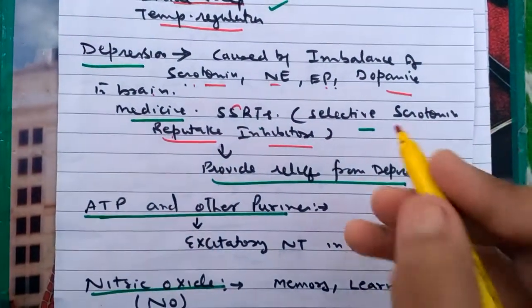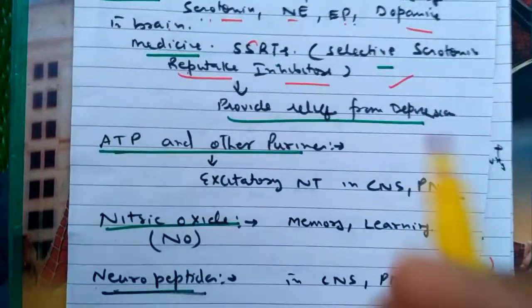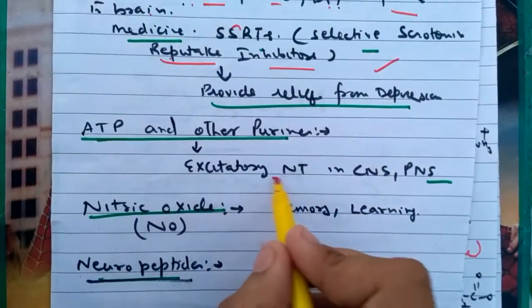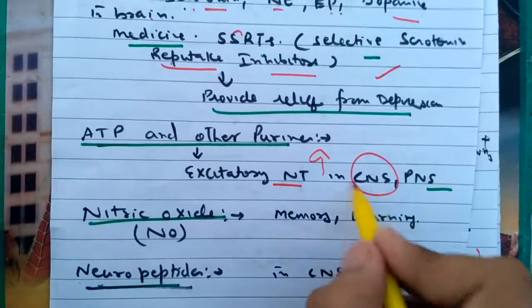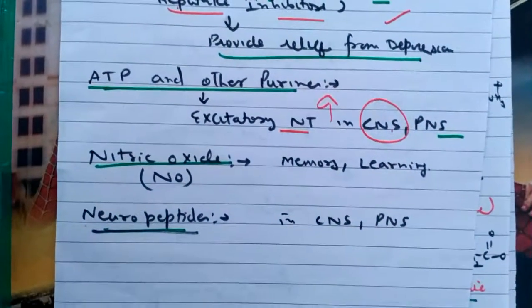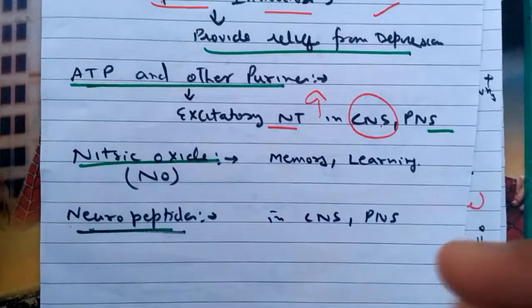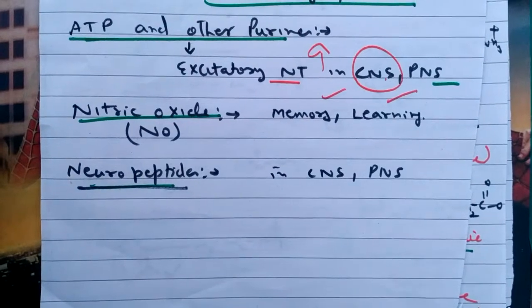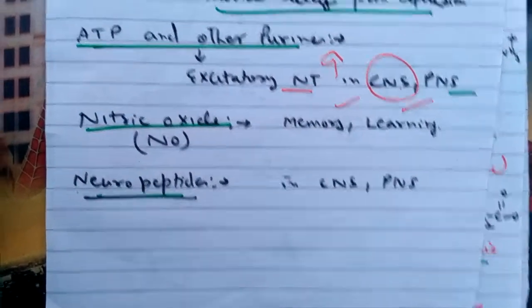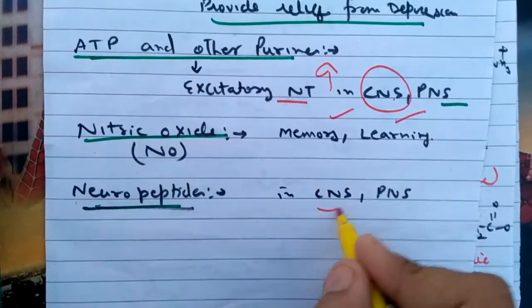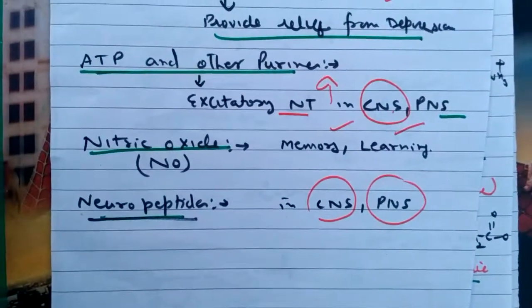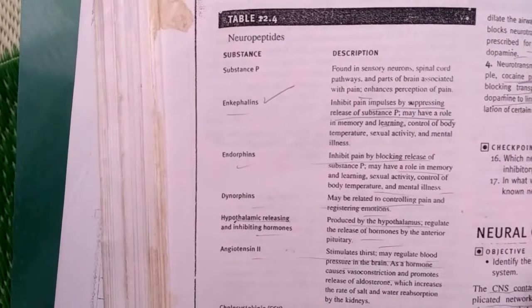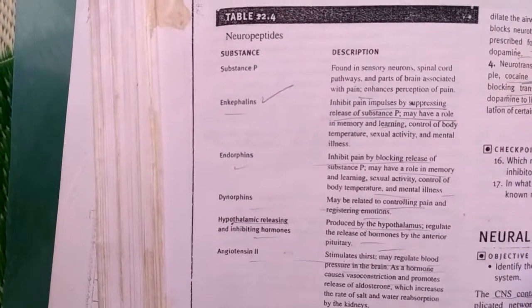ATP and other purines are excitatory in nature in the CNS and PNS. Nitric oxide is involved in memory and learning. Neuropeptides are present in both the CNS and PNS and have a variety of roles, as shown in the diagram or table.